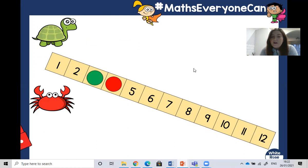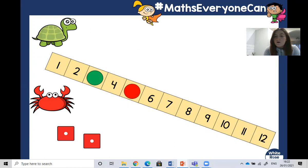Next, it's the crab's turn again. Rolling its dice. We've got one on one dice, one on the other. One and another one makes two. So then the red counter gets to move two places. One, two. Super duper.